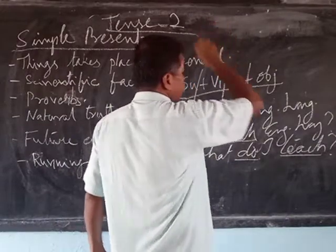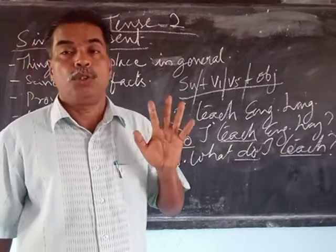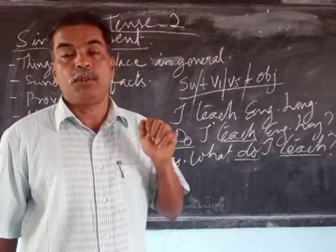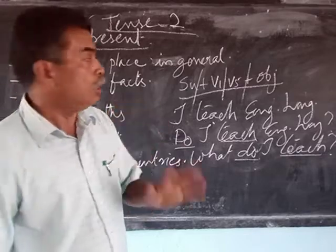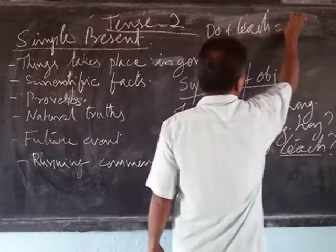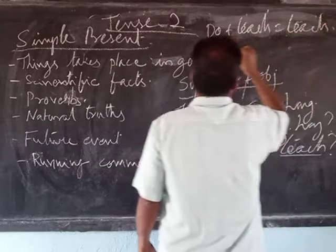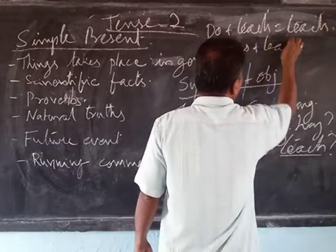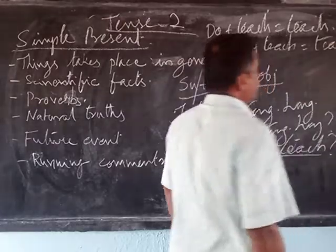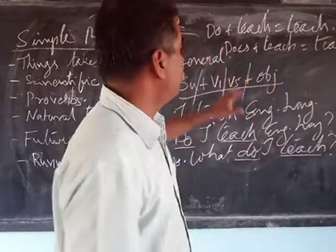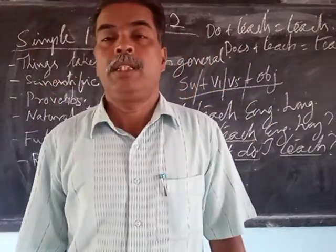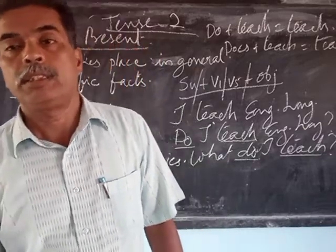We studied the five forms of verbs. For the verb 'do': do, did, done, doing, does. So: do + teach = teach; does + teach = teaches; did + teach = taught; doing + teach = teaching; done + teach = taught. These are the five forms of the action verb.